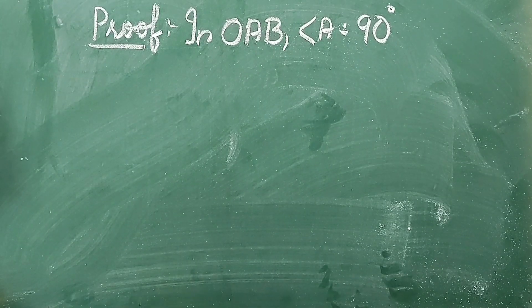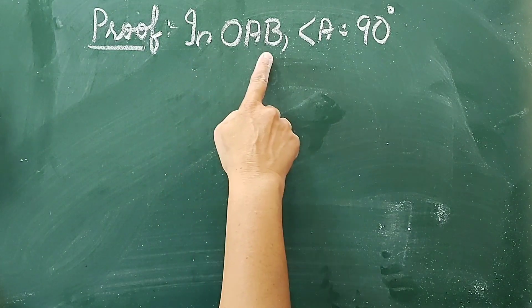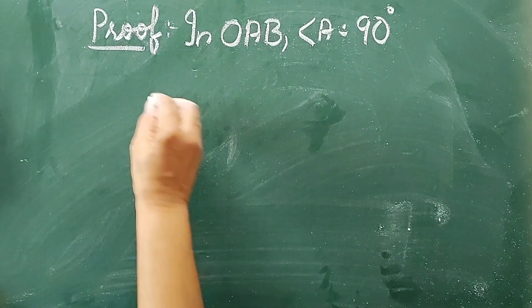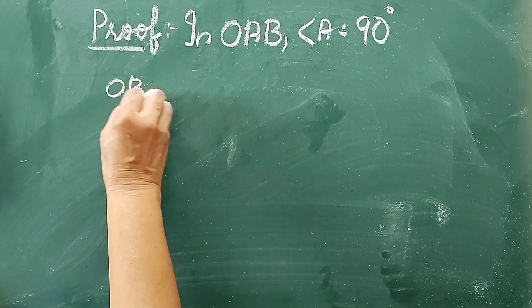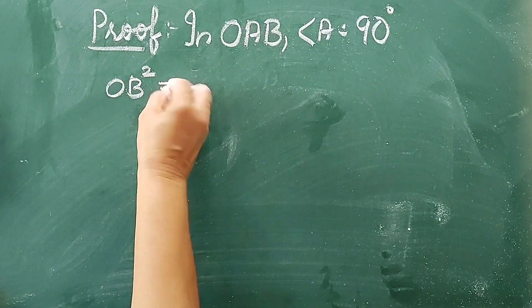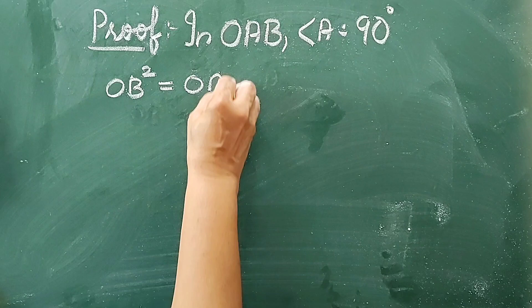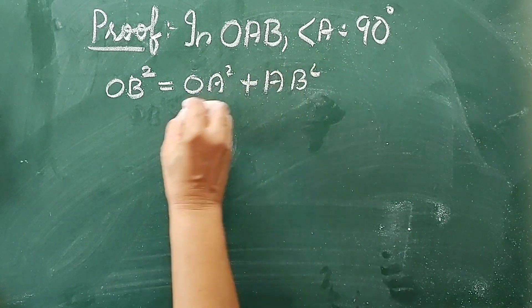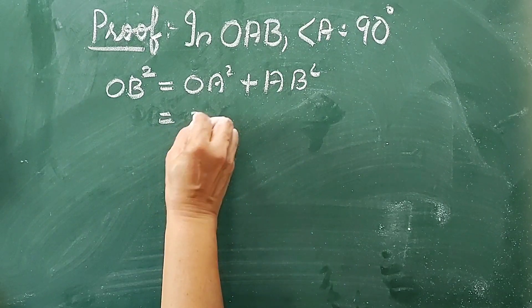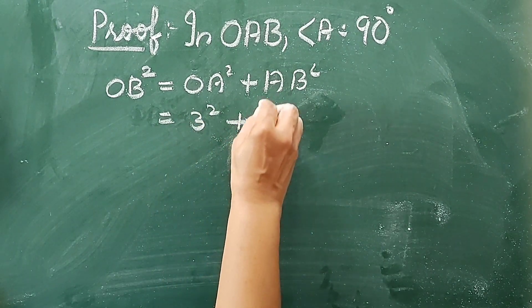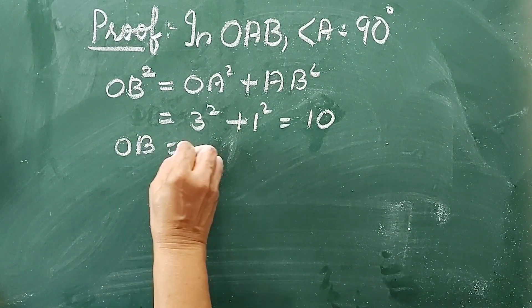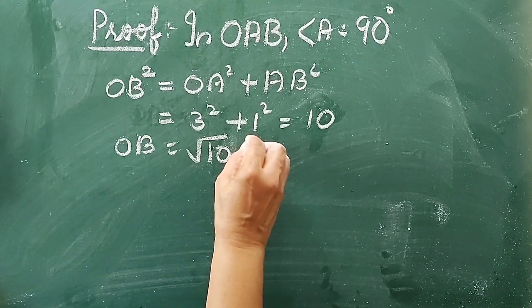Proof: From the figure, in triangle OAB, angle A equals 90°. Therefore, by Pythagorean theorem, OB² is equal to OA² + AB², that is equal to 3² + 1² = 10. So, OB equals √10 units.